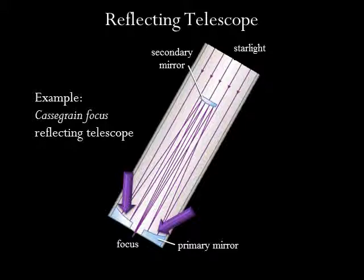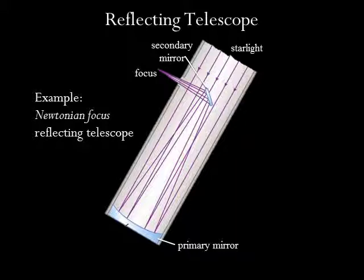A reflecting telescope uses a precisely curved primary mirror to gather light. This mirror reflects the gathered light to a secondary mirror that lies in front of it. The secondary mirror then reflects light to a focus where the eye or a detector can observe it. For a Cassegrain focus, this is through a hole in the primary mirror. In other designs like the Newtonian telescope, the focus is through a hole in the side of the tube. It may seem like the secondary mirror in front of the primary would cause problems, but in practice it's not a big deal. Telescopes are focused on very distant objects, so the secondary only blocks out a small fraction of light from reaching the primary.